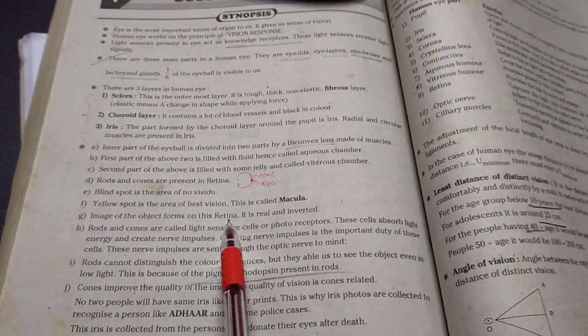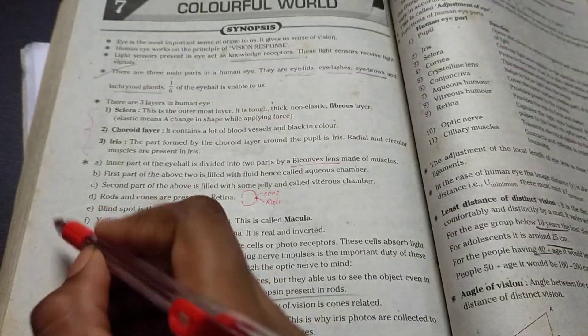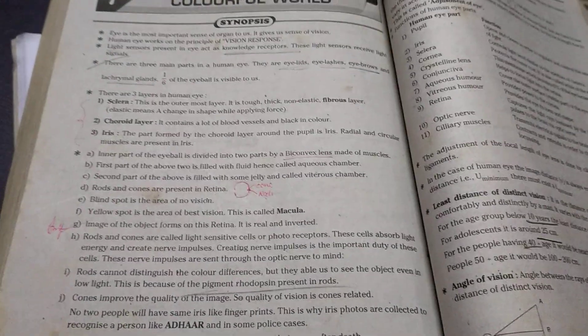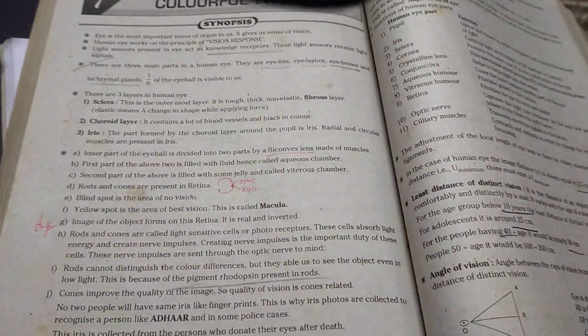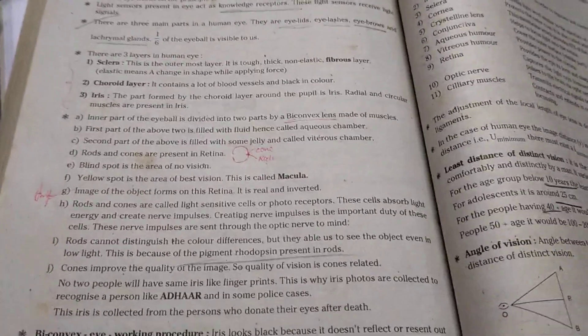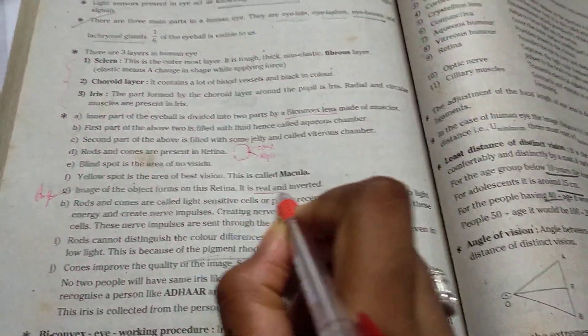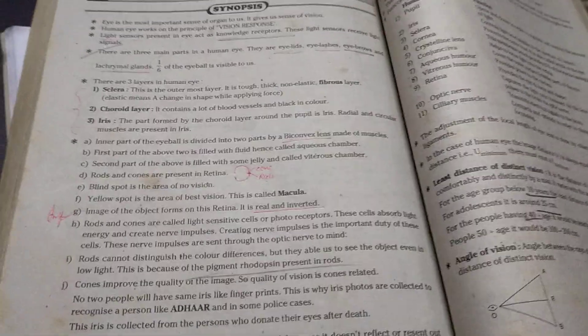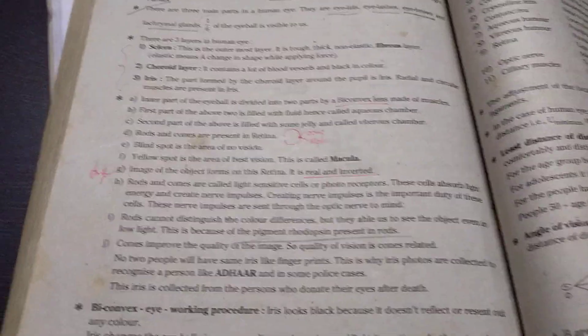Okay, image of the object forms on retina. It's real and inverted. So it's very important based on the examination point of view. The real image which will form in the plane mirror only. But again it can form in our eyes. It's wonder.